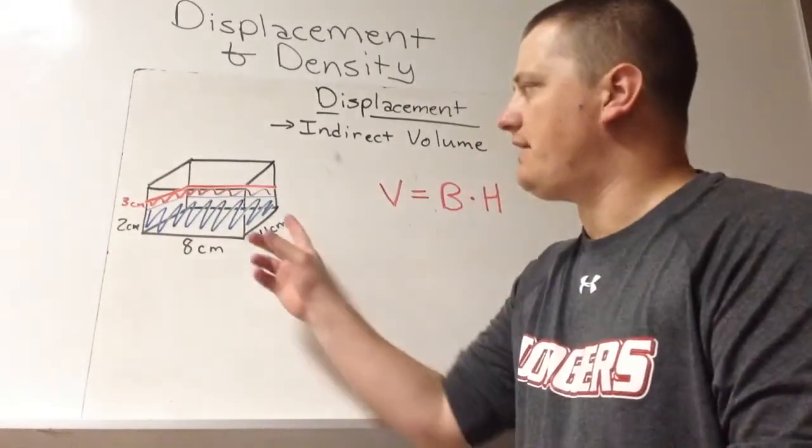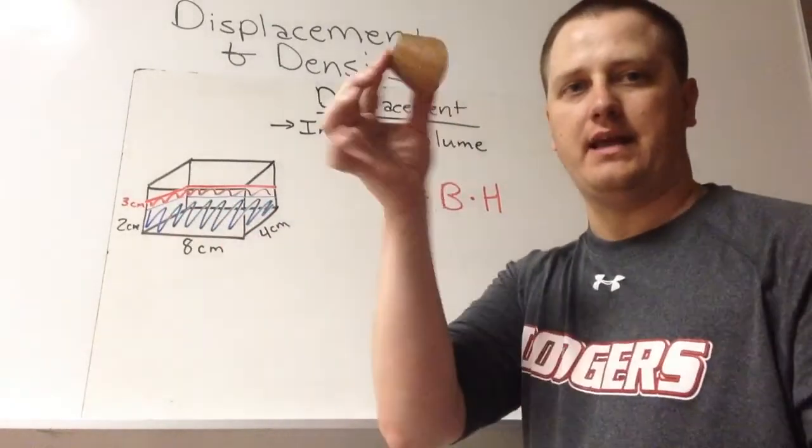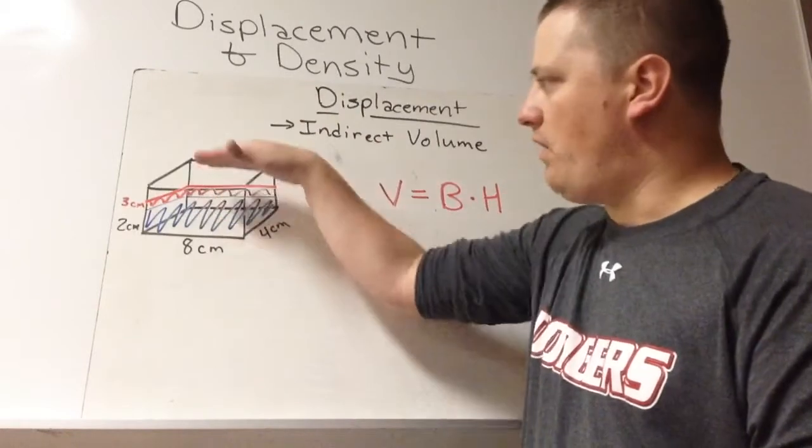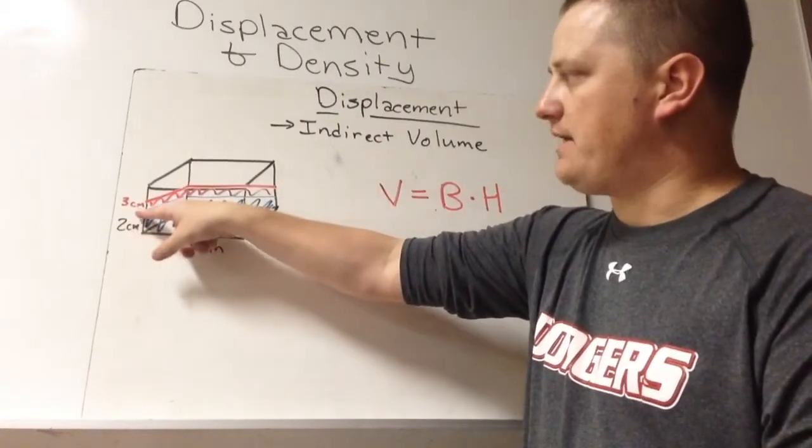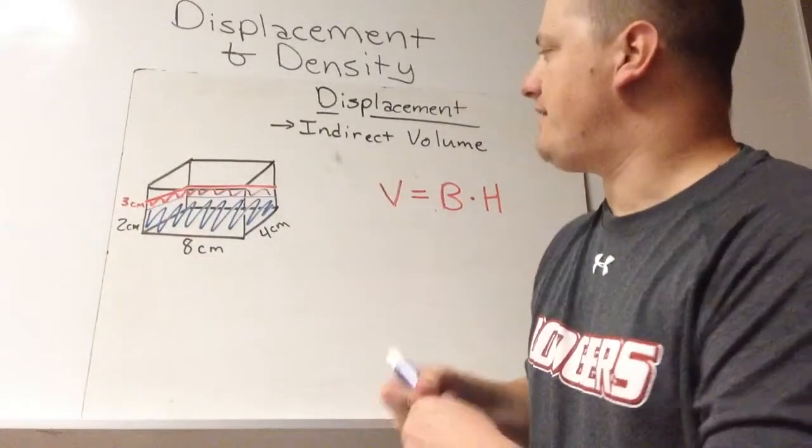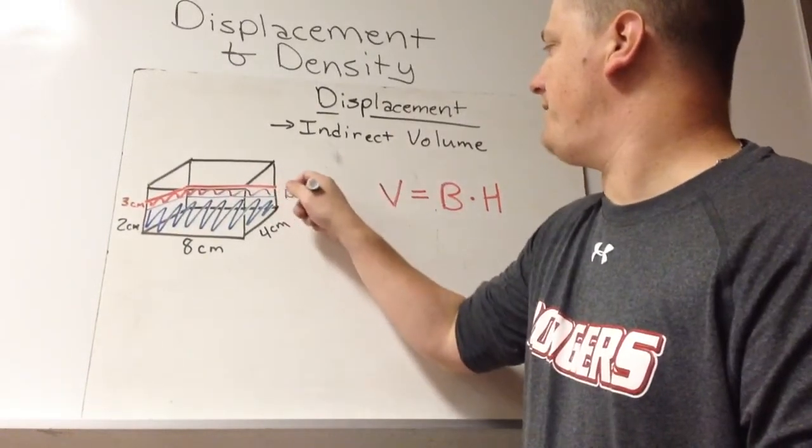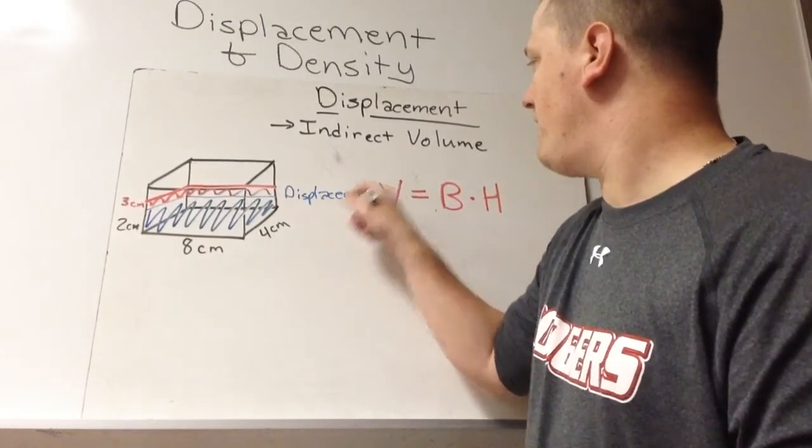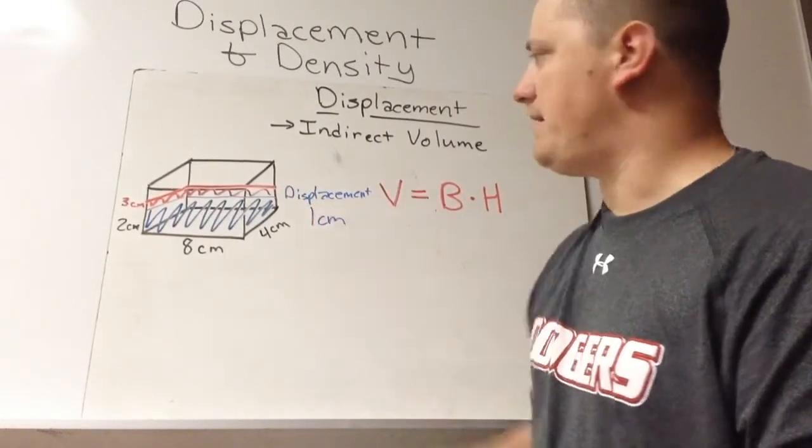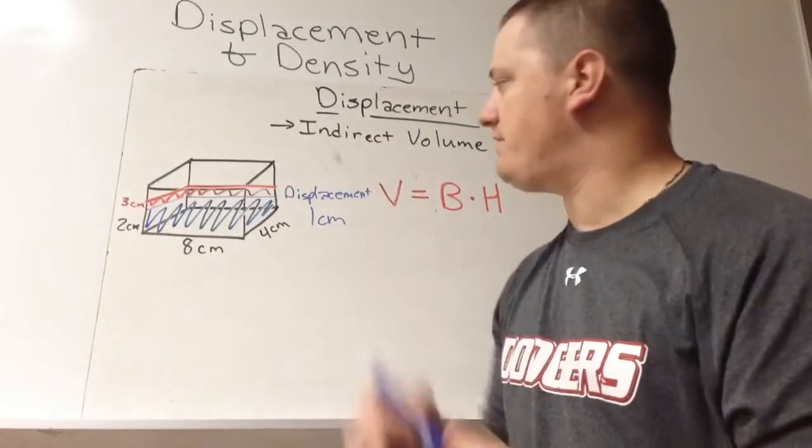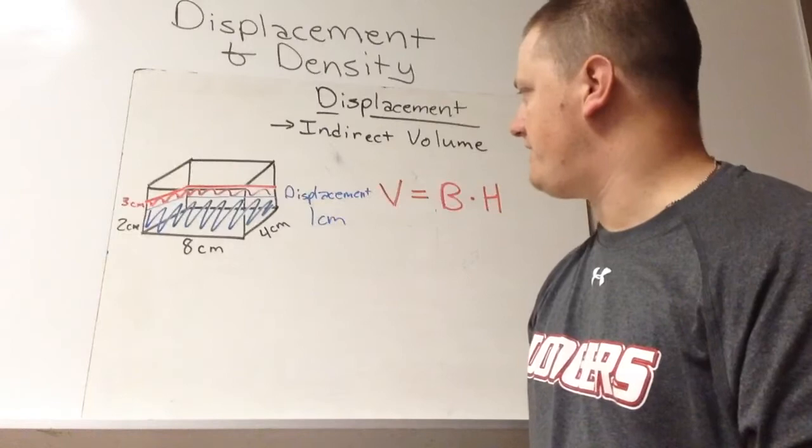So what I have here is a box and we're going to say that I take this weird object and I drop it in the box and the water goes from 2 centimeters high to 3 centimeters high. If that's the case, the displacement is 1 centimeter because it went from 2 to 3. So that means it rose 1 centimeter. Displacement of 1 centimeter.